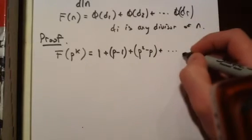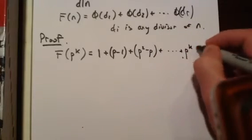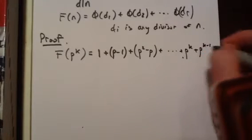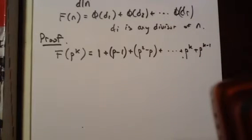And so on, all the way up to p^k minus p^(k-1). And this is a telescoping series.